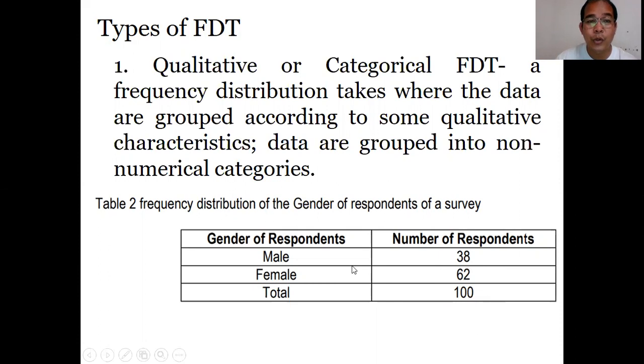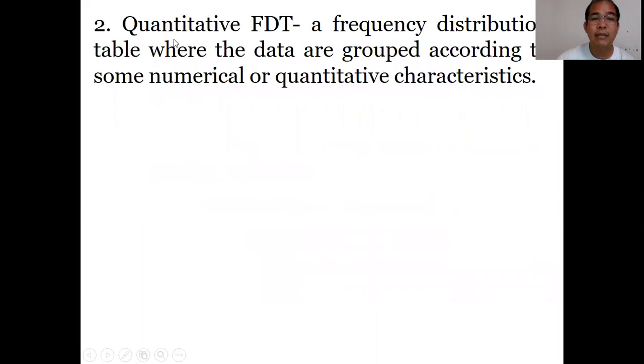Another type of frequency distribution is known as Quantitative frequency distribution table. A frequency distribution table where the data are grouped according to some numerical or quantitative characteristics.